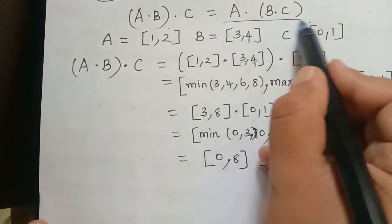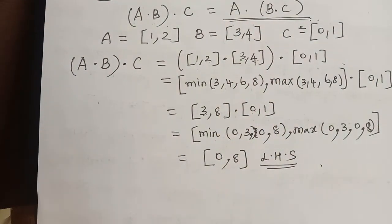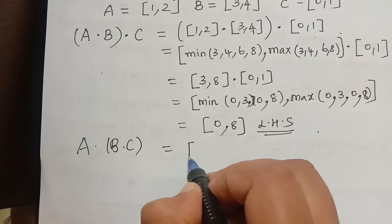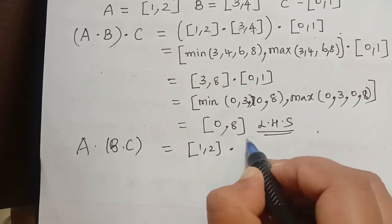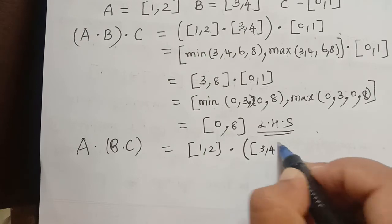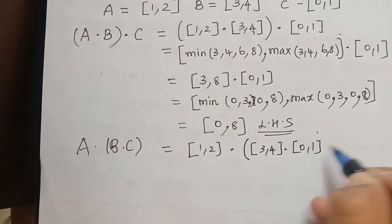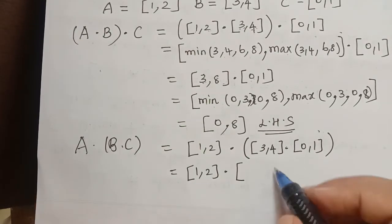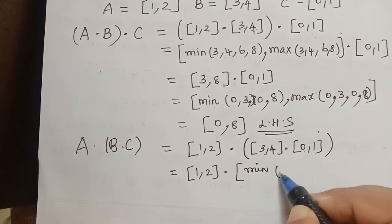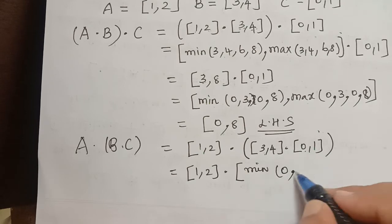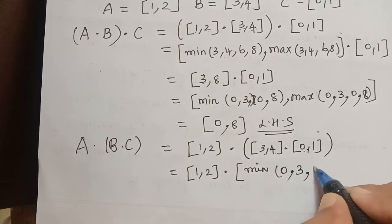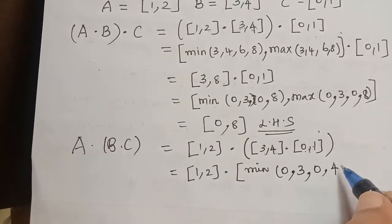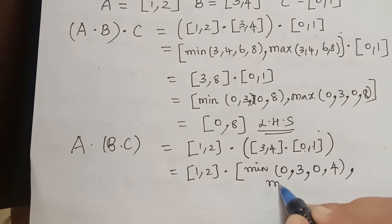In a similar manner we will evaluate the right hand side and check whether it equals the left hand side. The right hand side is A multiplied with (B multiplied with C), so that is closed interval [1, 2] multiplied with the bracket closed interval [3, 4] multiplied with closed interval [0, 1]. By the definition, [3, 4] multiplied with [0, 1] gives minimum of {3×0, 3×1, 4×0, 4×1} = 0, and maximum = 4.